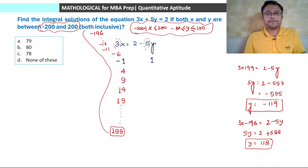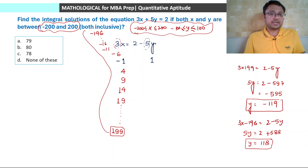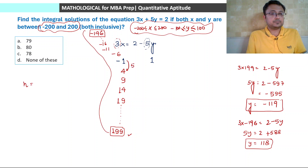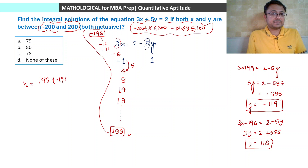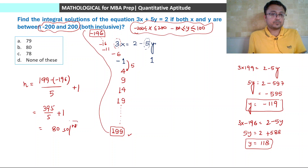Now, the number of solutions: we know the first value is minus 196, the last value is 199, and the common difference is 5. So number of solutions n equals (199 minus (minus 196)) divided by 5, plus 1 — that is 395 divided by 5 plus 1, which equals 79 plus 1 equals 80 solutions.